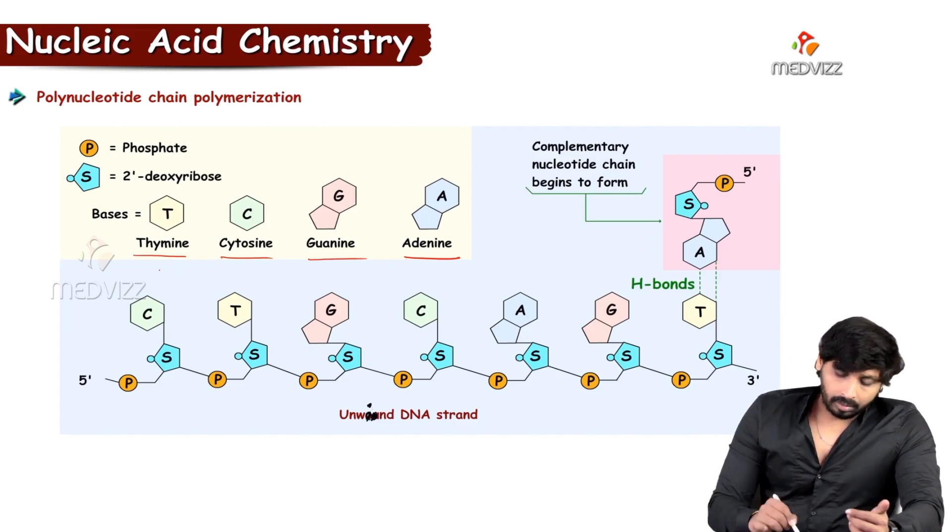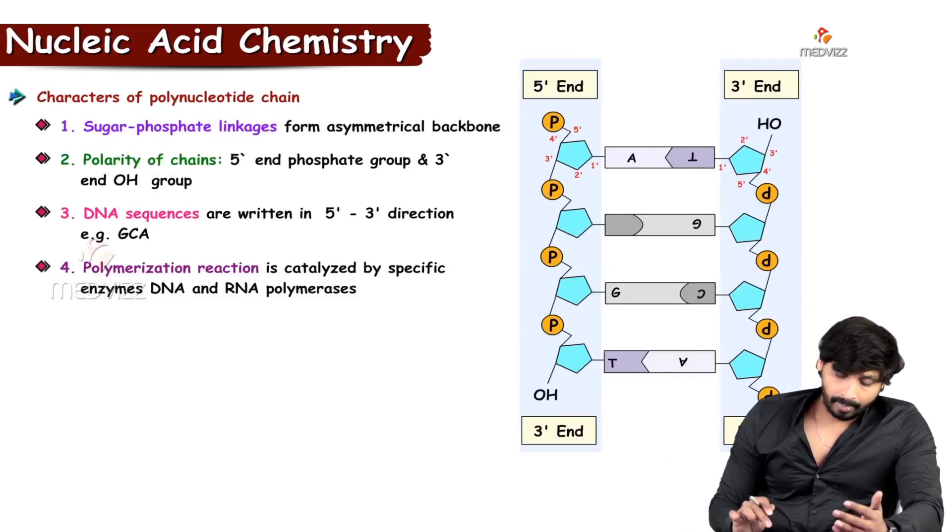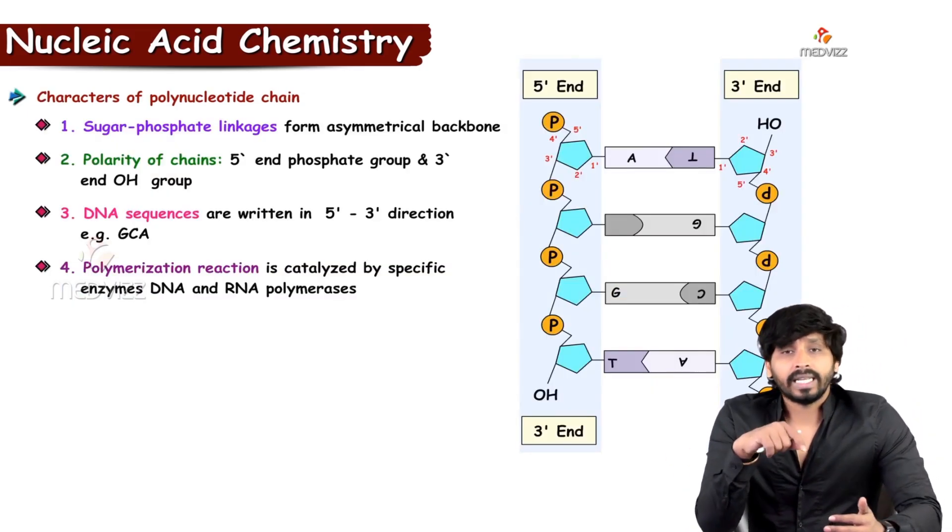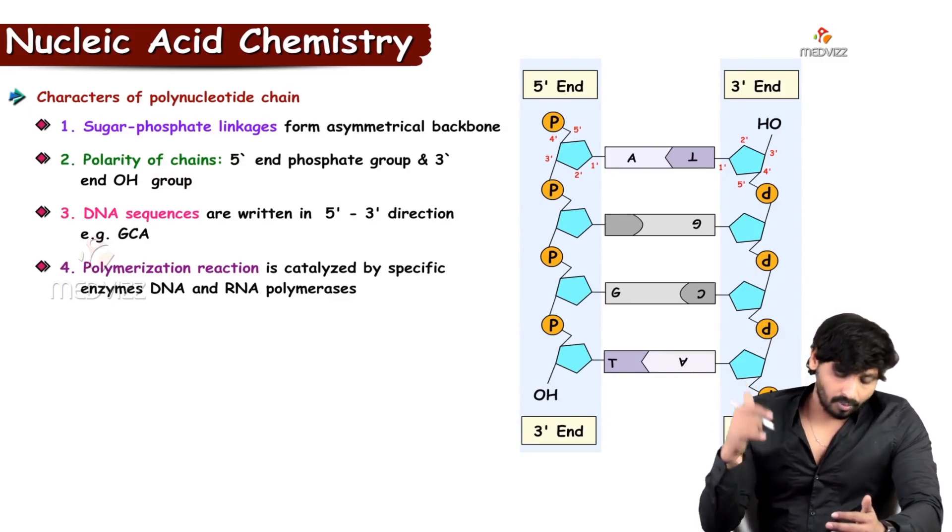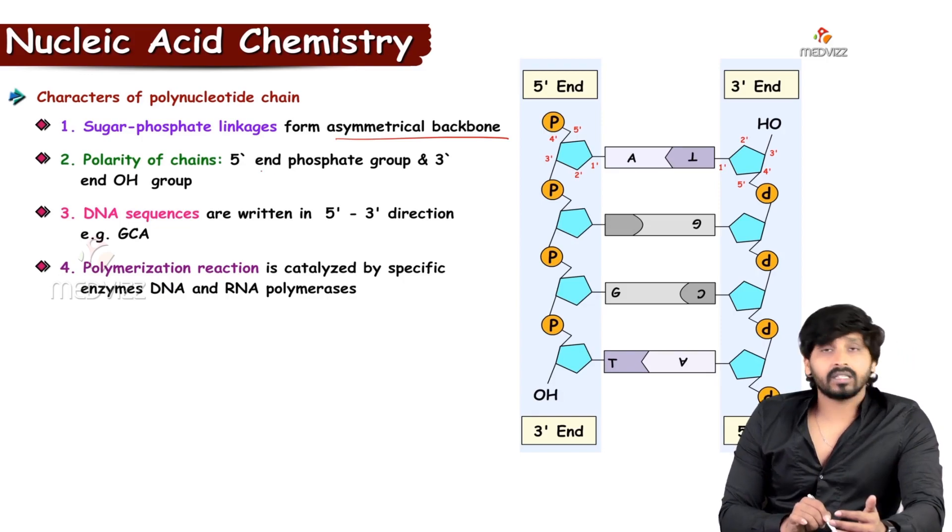Here, the complementary nucleotide chain, how it is going to form. Sugar phosphate linkages are going to be forming an asymmetrical backbone. And then polarity of the chains.